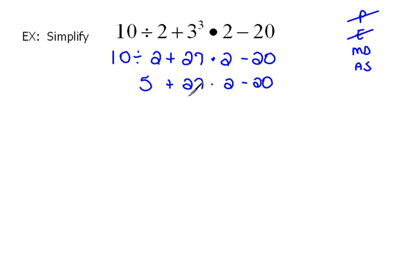Now we're going to do our multiplication. So we have 5 plus 27 times 2. We may have to do this on the side just to make sure that we get the correct answer.